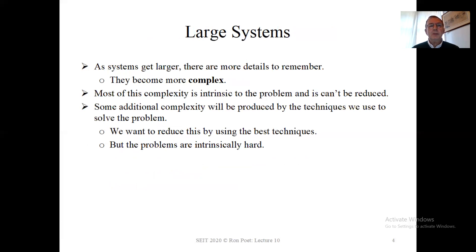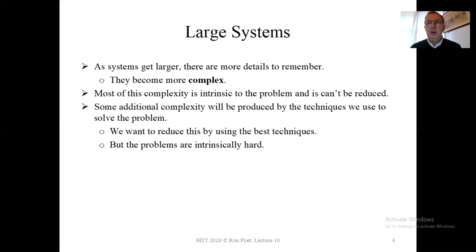Let's say a bit about large systems. As systems get larger, there are more details to remember and they become more complex. Most of this complexity is intrinsic to the problem — we can't get rid of it. But in some cases, the way that we produce the software will introduce additional complexity, and that's something we've got control over. So we want to reduce the additional complexity by using the best techniques, though there will always be quite difficult aspects that we can't get rid of.